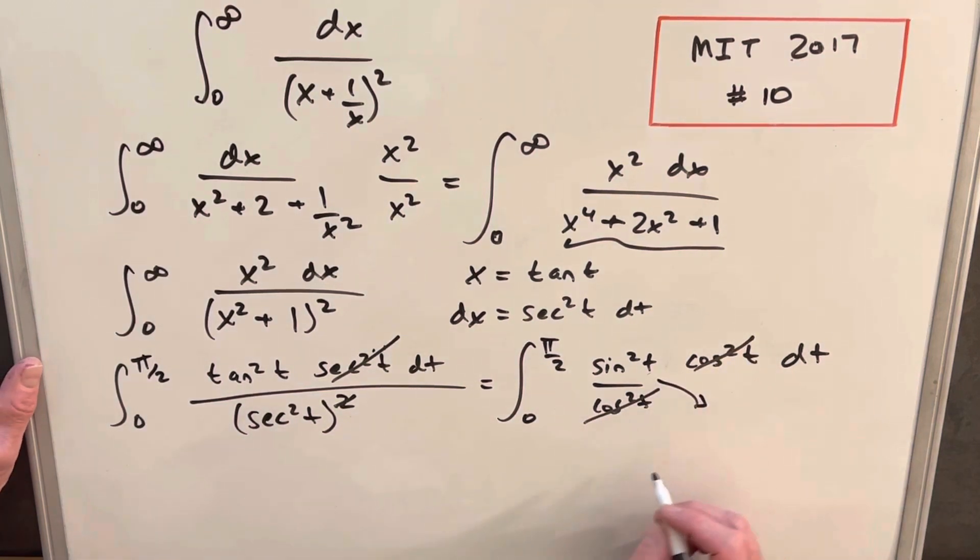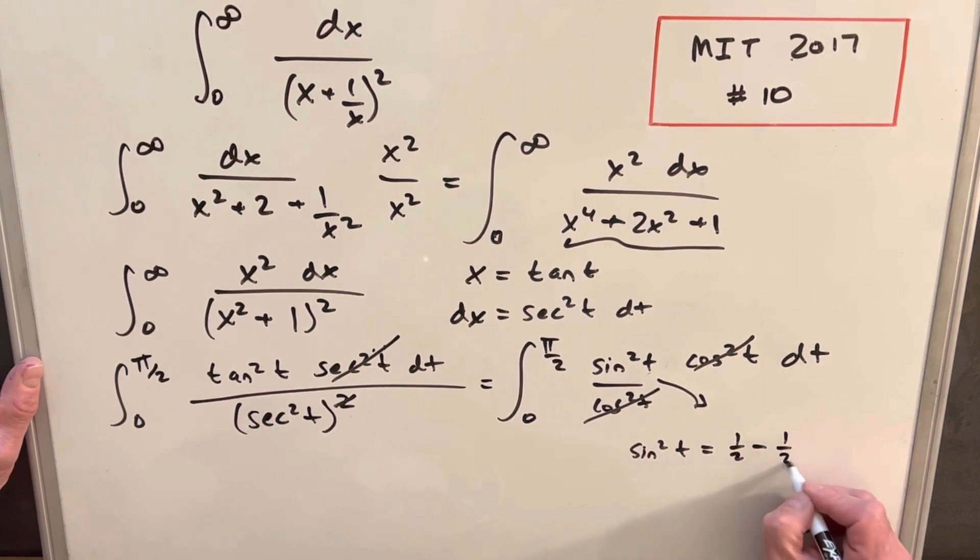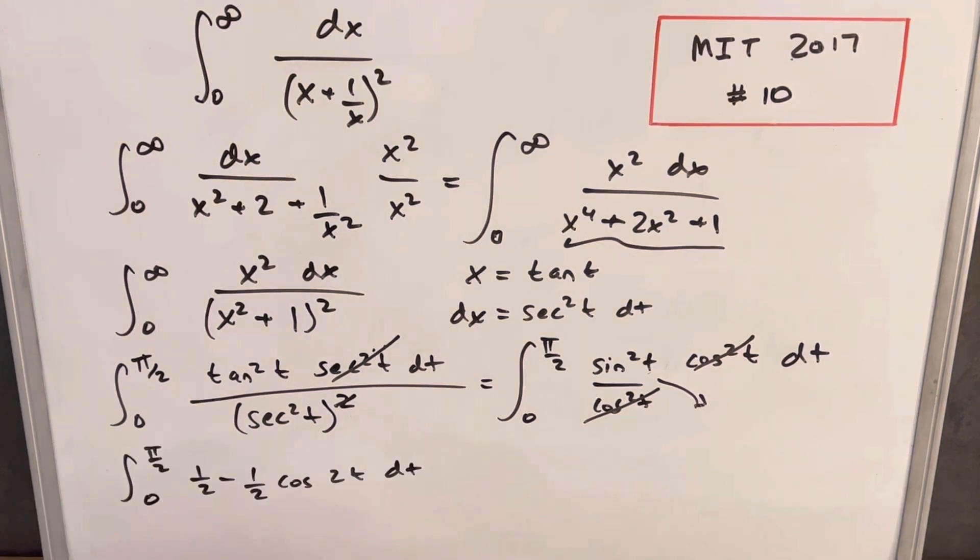Here, what I'll do is use the angle reduction. So we can write sine squared t as half minus half cosine of 2t. And then here we're ready to integrate.